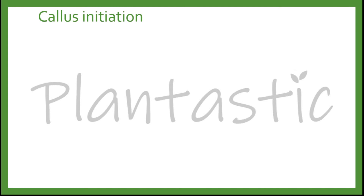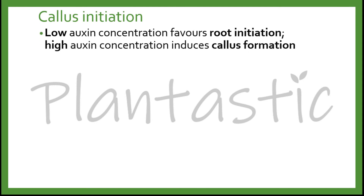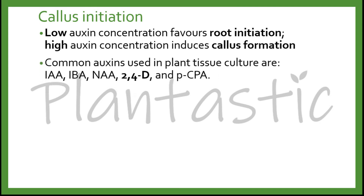Callous initiation can be done by several ways. First, as we know, low auxin concentration favors root initiation. High auxin concentration induces callous formation. The common auxins used in plant tissue culture are IAA, IBA, NAA, 2,4-D, and PCPA.